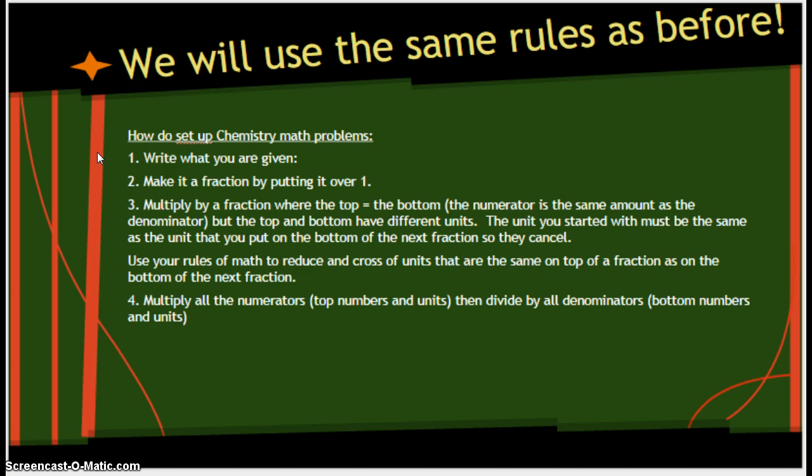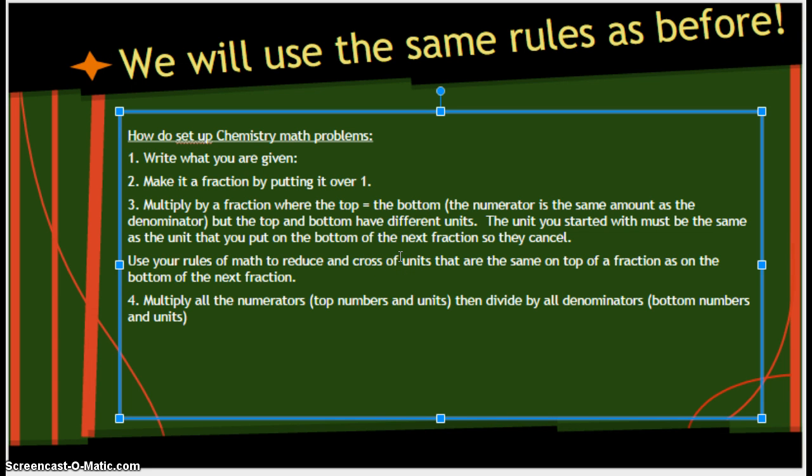How to set up chemistry math problems: Number one, write what you are given. Number two, make it a fraction by putting it over one. Number three, multiply the fraction where the top equals the bottom. The numerator is the same amount as the denominator, but the top and bottom have different units. Remember at the beginning we said 12 eggs is the same as one dozen eggs. The unit you started with must be the same as the unit at the bottom of the next fraction so they cancel. Use your rules of math to reduce and cross off units. And then multiply all the numerators and divide by all the denominators.